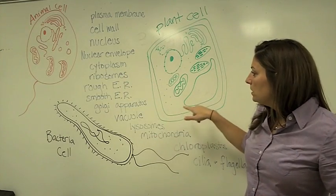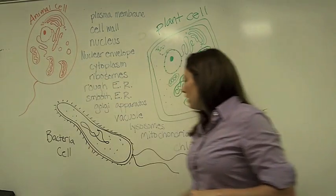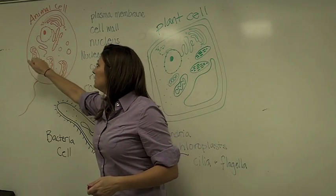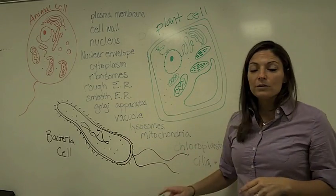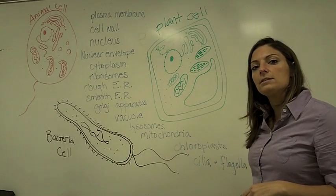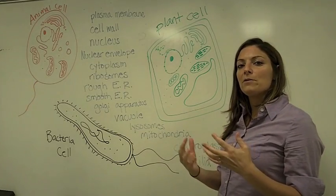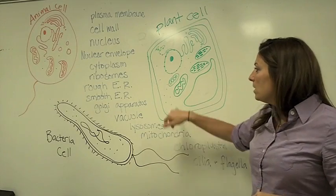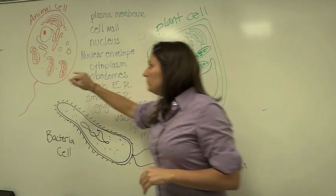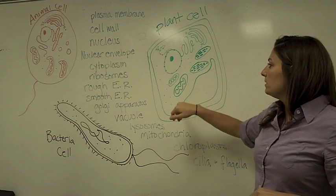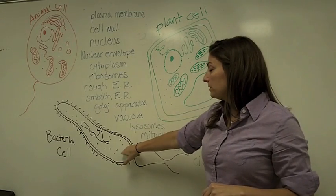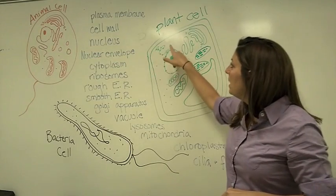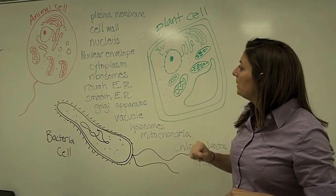The ribosomes — you'll see those in all three kinds of cells. They are little dots. The ribosomes are really important because that's where proteins are put together. Remember proteins are made up of amino acids, and those amino acids need to be put together, and that happens at the ribosomes. So they're in all three. In plant and animal cells you find them free-floating, and in bacterial cells they're free-floating also.